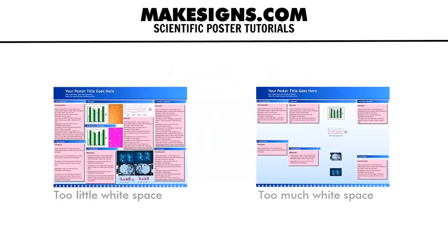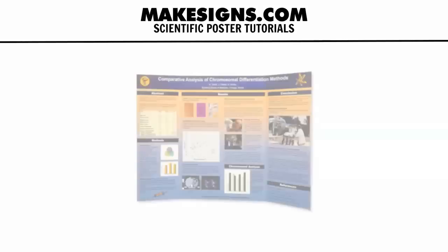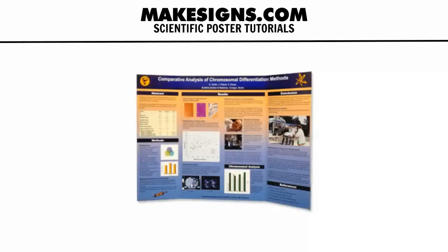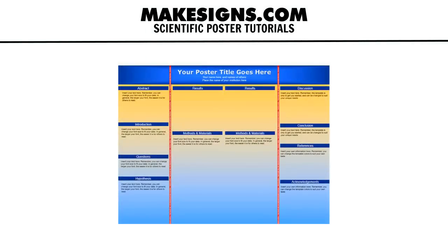As you can see, it's possible to have too little or too much white space. Another problem we see is that people don't leave enough space at the edges of their poster, and their content looks like it's falling off the page. Finally, if you're printing your poster as a tri-fold poster, make sure you keep your content away from the folds, which are indicated in the tri-fold template.